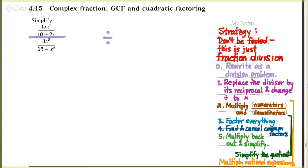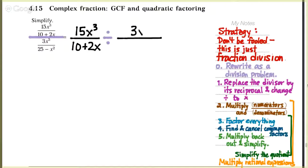Putting the numerator as the dividend and the denominator as the divisor. So this is really nothing more than the division problem: 15x cubed over 10 plus 2x, divided by 3x to the fifth over 25 minus x squared.